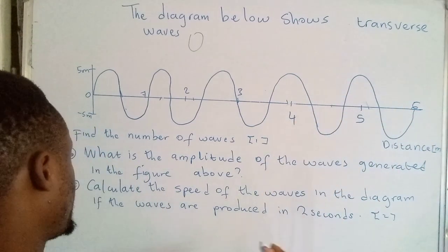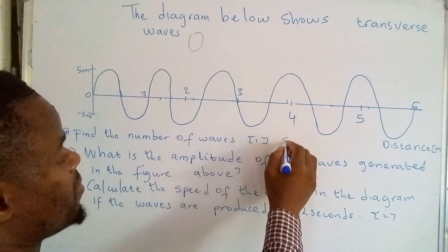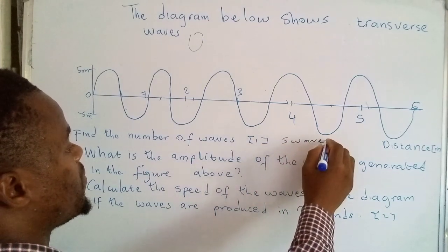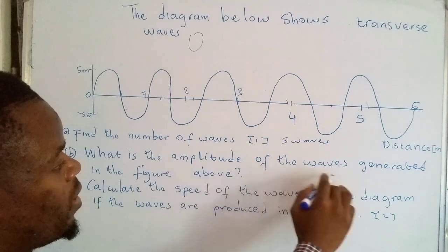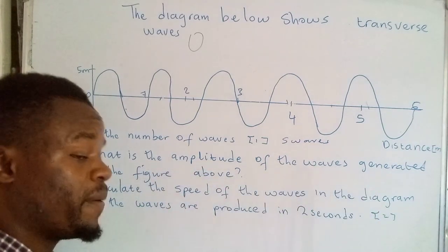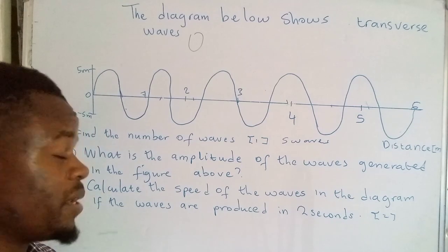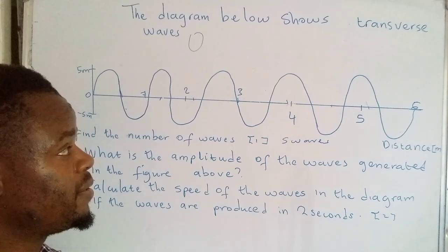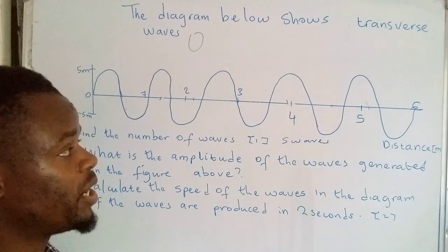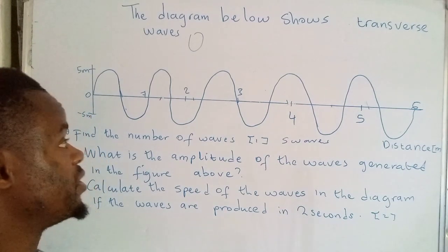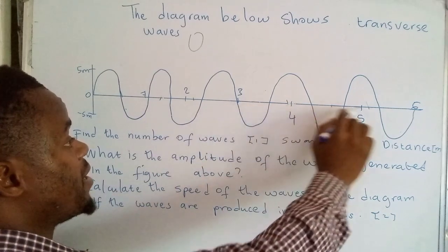So there are five waves produced. From here, what is the amplitude of the waves generated in the figure above? You need to know amplitude is simply the maximum displacement that a particle can undergo from its resting position.